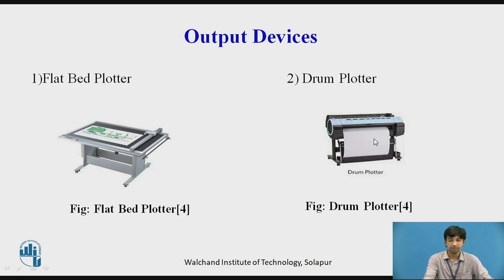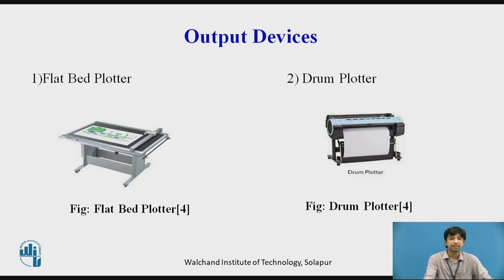Drum plotter. In a drum plotter, we have a drum on which the paper is fixed; the paper can hang on both sides. Rotation of the drum provides motion in the Y direction, while the pens move in the X direction via an X drive motor. There is also a mechanism to raise and lower the pen. The basic advantage is that it takes less space, the total movement of the pen is much less, and these plotters are typically faster. The disadvantage is that the cost and cost of maintenance are both high.